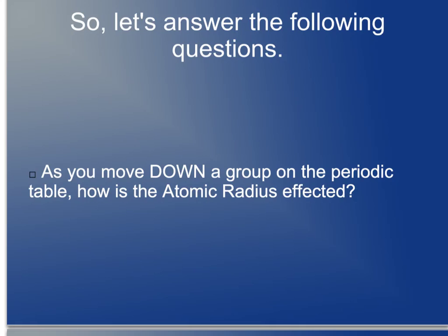So can you answer the following question? As you move down a group on the periodic table, how is the atomic radius affected? At this point we should be able to answer the question that as you move down, the atomic radius increases because you've got more energy levels, energy shells to fill. The atomic number is going up, so the number of electrons is going up, therefore you need more electron energy levels up through seven periods, seven rows, to fill. Therefore we're going to see an increase in atomic radius.